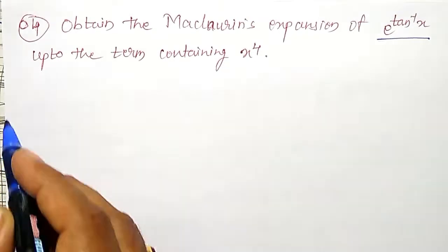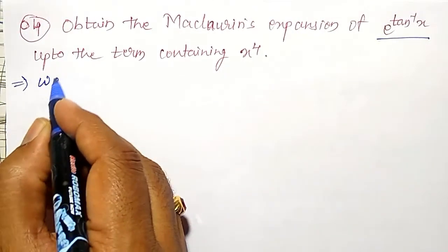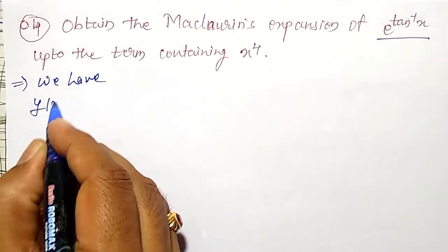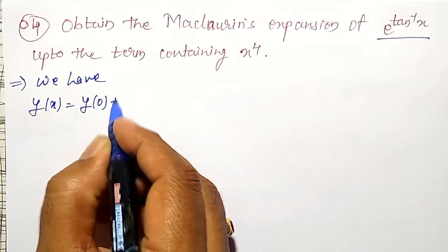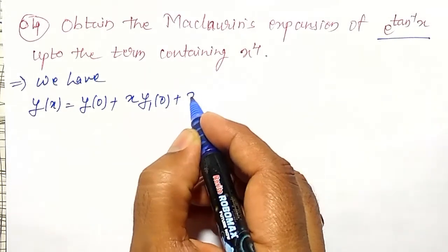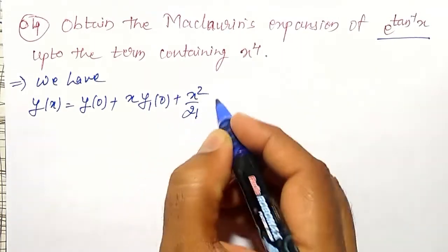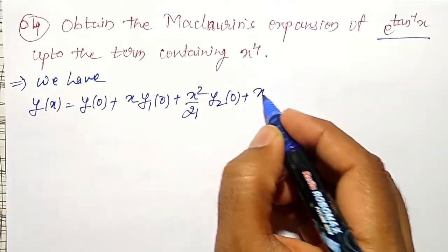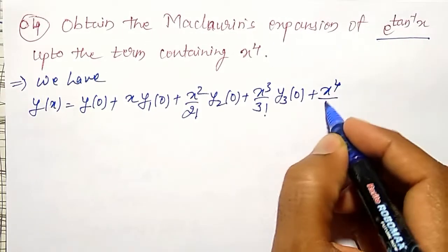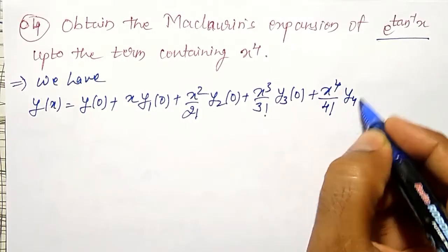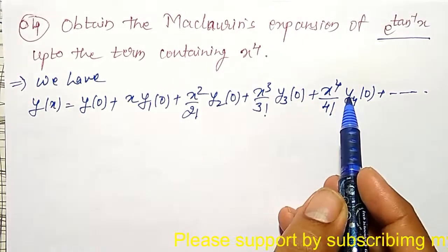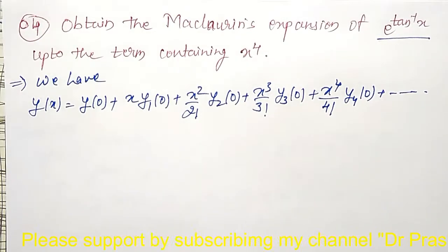Today we obtain the Maclaurin's Expansion of e raised to tan inverse of x, up to the term containing x to the power of 4. For that, we have Maclaurin's series: y(x) = y(0) + x·y1(0) + x²/2! · y2(0) + x³/3! · y3(0) + x⁴/4! · y4(0) + so on. I want terms up to x to the power 4, therefore I need to calculate up to the 4th derivative value at x = 0.